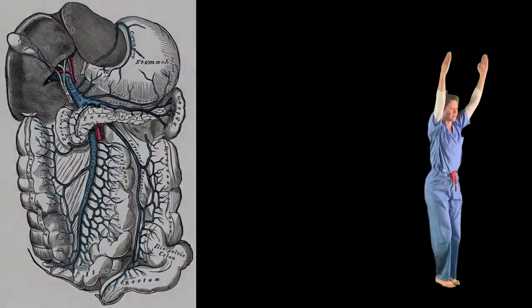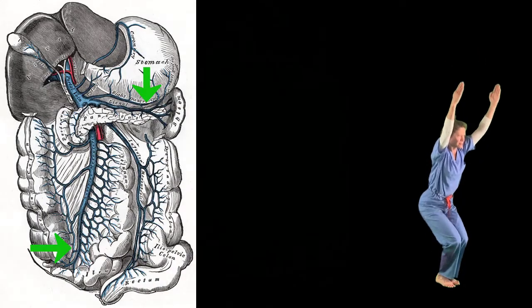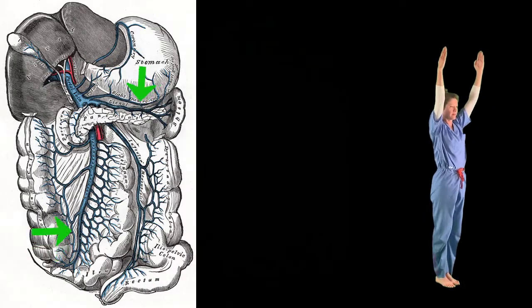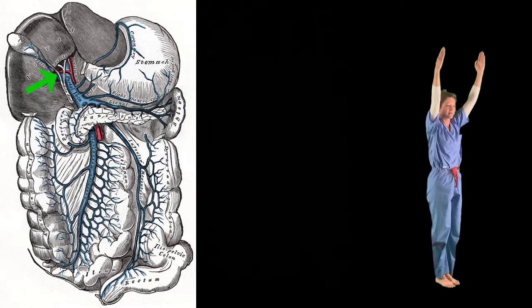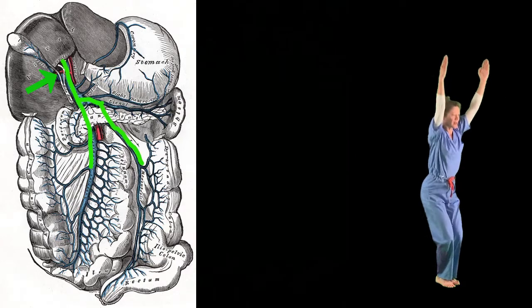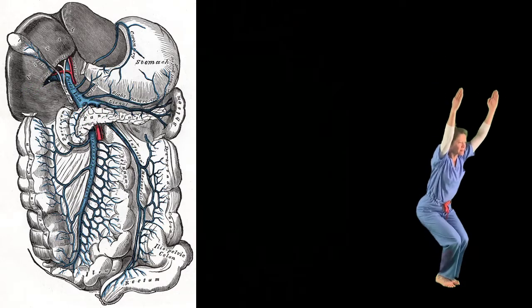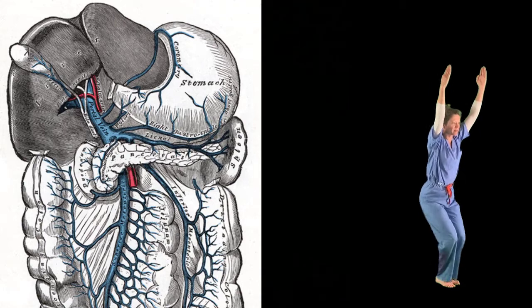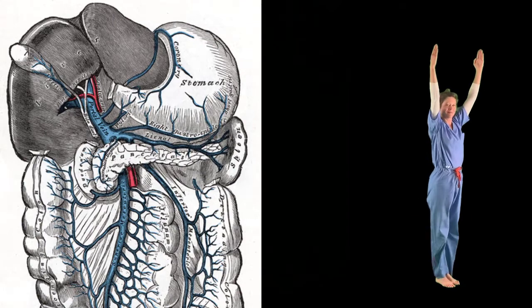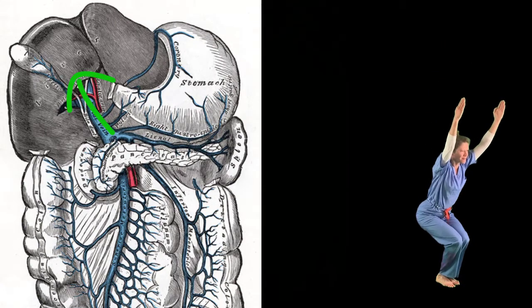And lastly, the splenic vein and the superior mesenteric vein merge to form the portal vein, otherwise described as the back of the chair. So ultimately, the portal vein takes blood from all the organs previously discussed and drains them into the liver.